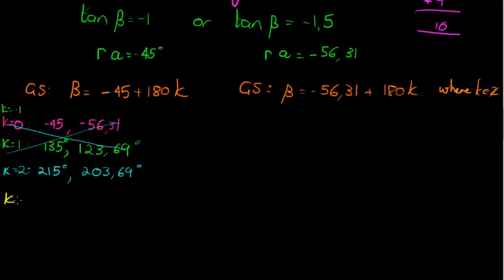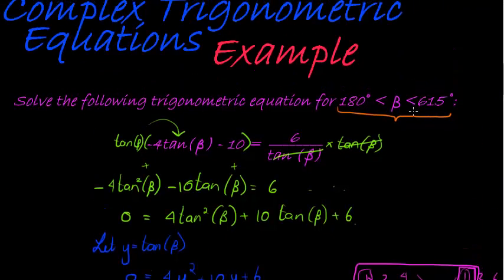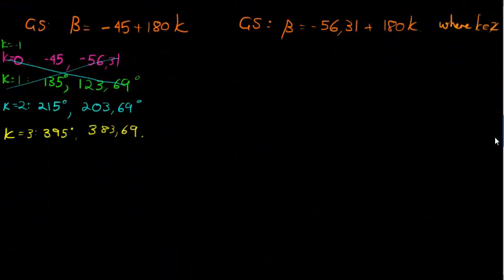Let's find a few more. k equal to 3 means I'm adding another 180 degrees, or just substitute k with 3 if you want it. Then for this answer, we get 395 degrees. If we add 180 to this one, we get 383.69. Both of those answers still less than 615, so I can continue that.